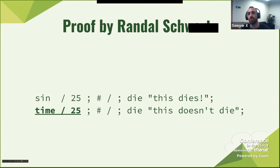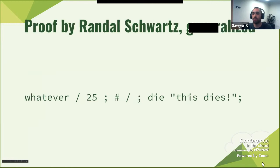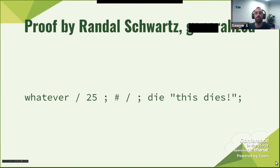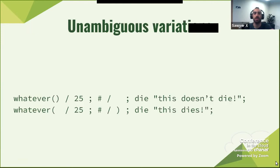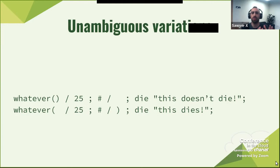A generalized version of this proof would be: whatever you have there could be parsed separately, and it really depends on the rules that Perl uses. The rules are written by a developer. Now, if you wanted to make this unambiguous, you could just use parentheses. The first one, called with parentheses, runs and then '/25/' is a comment. The second one would have the parentheses clearly showing the argument, and the rest will die.